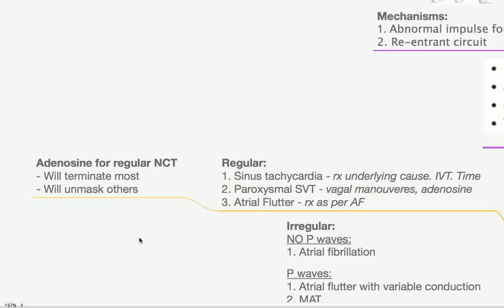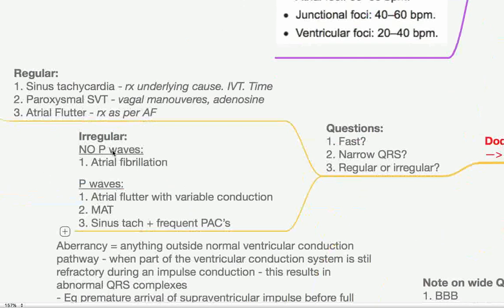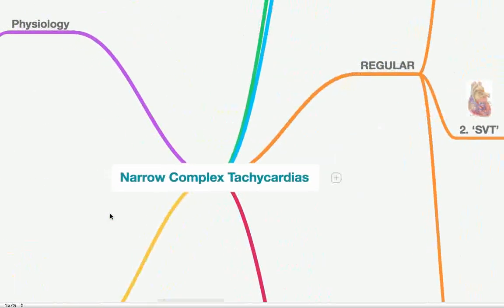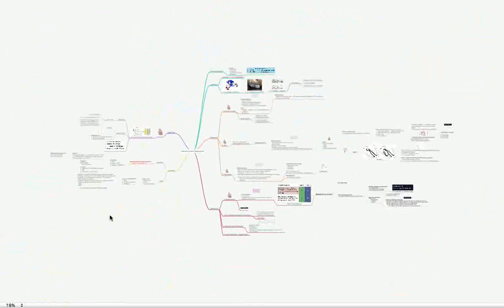If it's irregular and there are no P waves, then you've got atrial fibrillation most likely. If there are P waves, it could be atrial flutter with variable conduction. Could be having a bit of 2 to 1 block here, a bit of 4 to 1 block there. Multifocal atrial tachycardia is another potential. If there are those multiform P waves. And then finally, sinus tachycardia with just random frequent premature atrial complexes thrown in could also be another potential. So thank you very much for watching. I hope that was somewhat helpful and I wish you all the best.